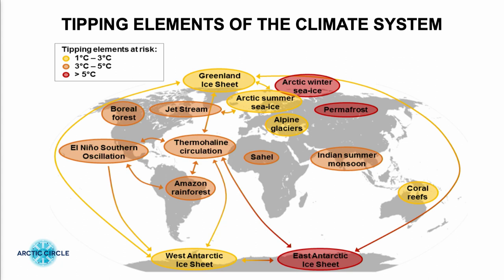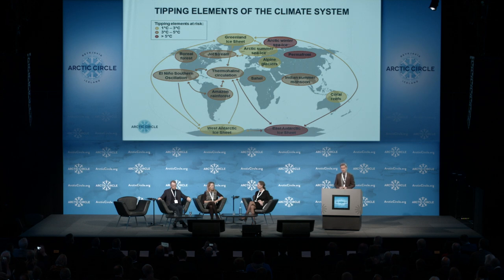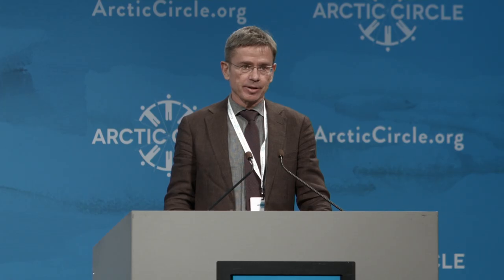Here is an overview map, and you see the Arctic has some of these tipping elements. The ones in yellow are those that could be triggered at a global warming range somewhere between one and three degrees — so between now and sometime, depending on our emissions, in the next decades.